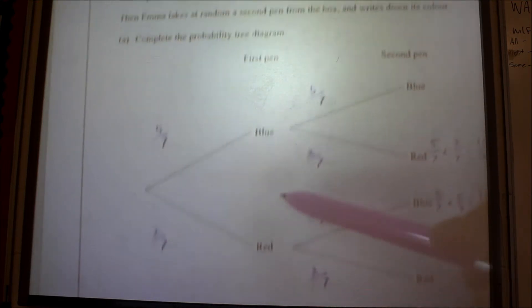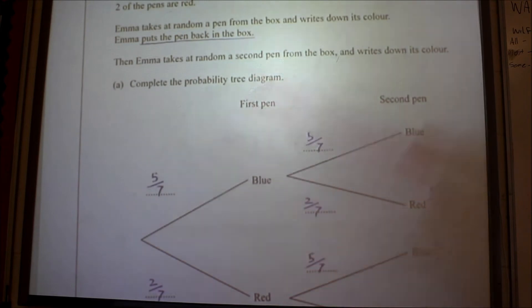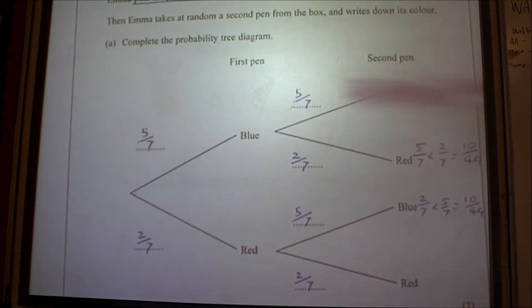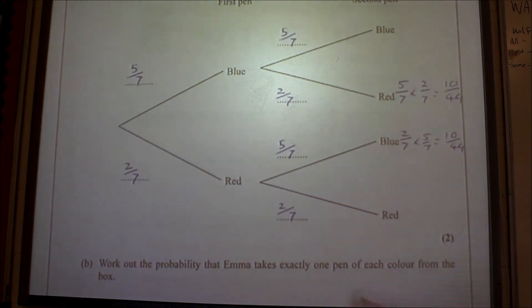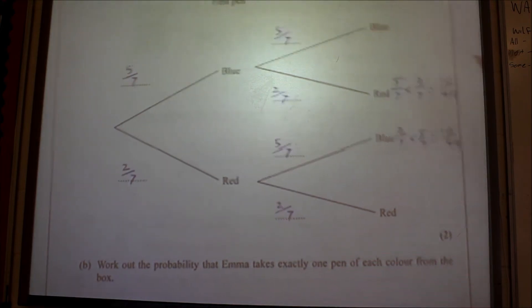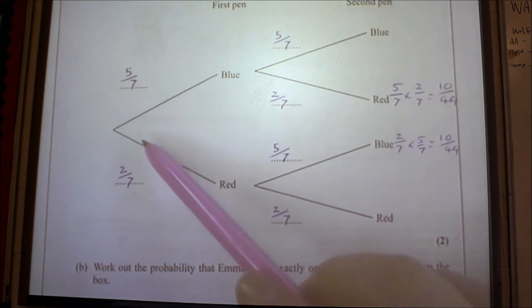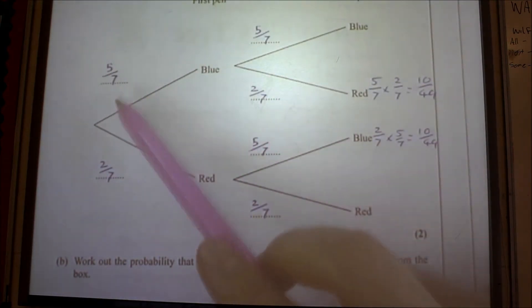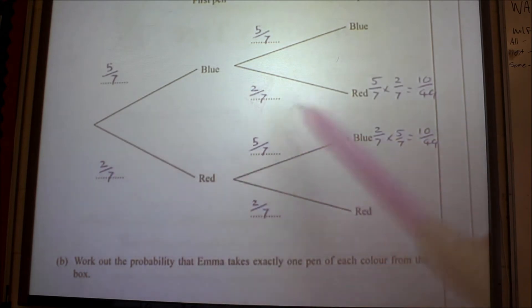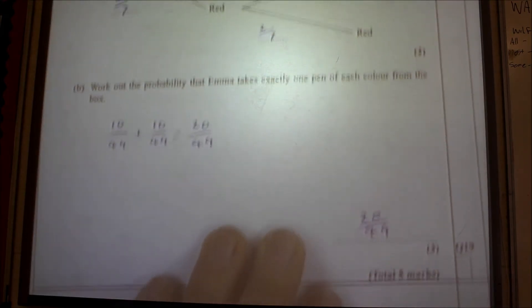Complete the probability diagram. Well, the probability to get the blue one is five out of seven and the red is two out of seven. And because she puts it back in, that is the same all the way down here, so keep those consistent. Work out the probability that Emma takes exactly one pen of each color. So to do that, you'd have to take a blue one then a red one, or red one then a blue one. So here what I've done, you multiply across. So it's five sevenths times two sevenths and two sevenths times five sevenths. They're both 10 over 49. You add them together, it is 20 over 49, and that's your answer.